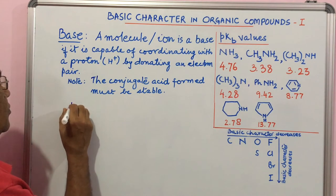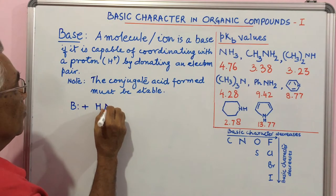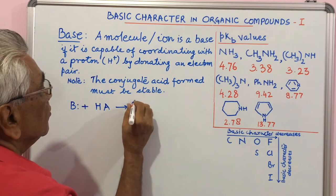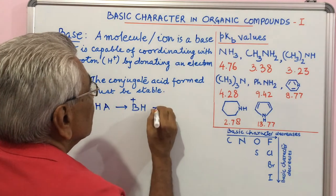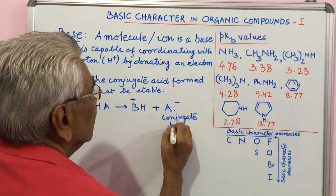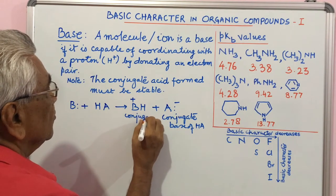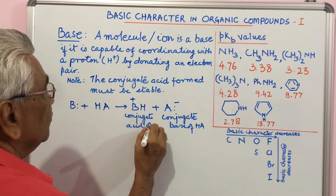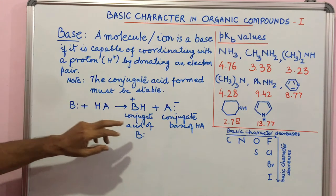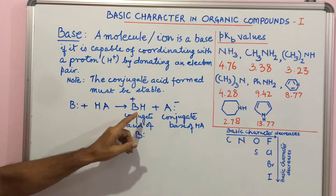For example, if this is a base B plus HA, it must combine with a proton. This acid forms BH+ plus A-. This is conjugate acid-base of HA and this is conjugate acid of base. The required condition is that for this to form it must be stabilized. If it is not stabilized you cannot write this.